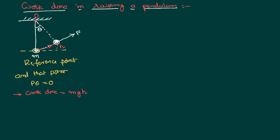Let us imagine the point of suspension is O. Let this point be A, let this point be B, and let this point be C. So, h is nothing but equal to BC. If you draw a perpendicular line onto the base line, you may get a value something like ED. We can say BC is also equal to AD. We can further write the value of AD, which is equal to BC, as OA minus OD. OA is nothing but the length of the original pendulum, so in place of OA I can write l. But I don't know the value of OD, so I would like to calculate it.